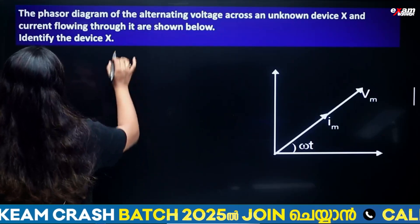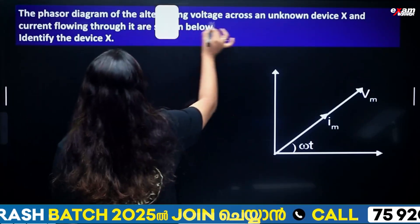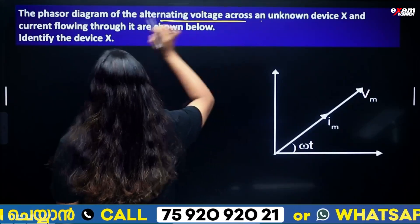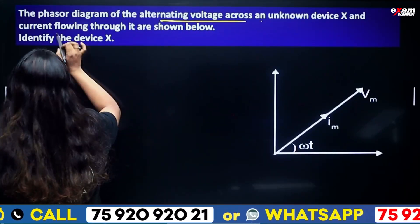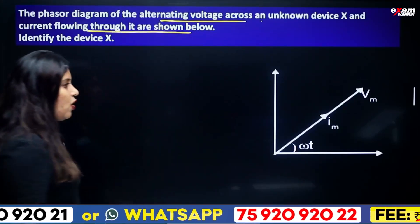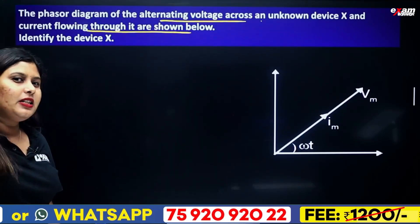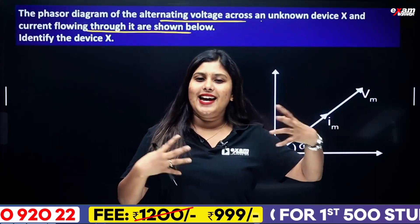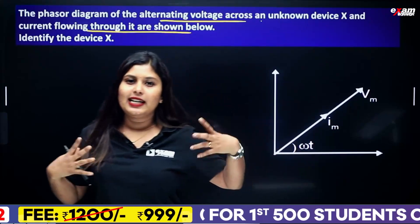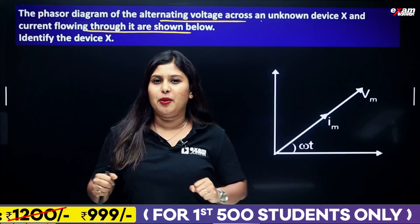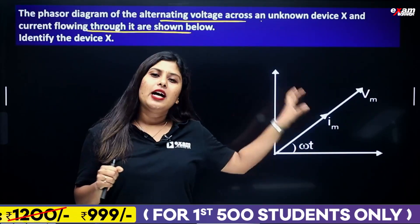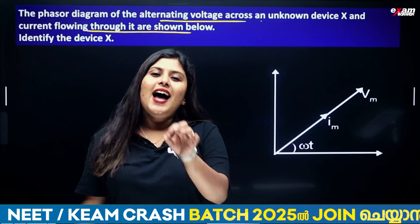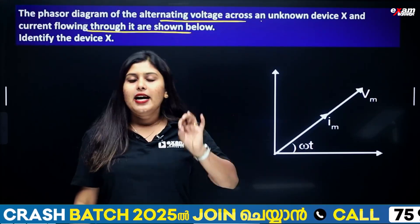The phasor diagram of an alternating voltage across an unknown device and the current flowing through it is shown below. We will look at the phasor diagram of AC voltage — the phasor diagram of current and voltage. Identify the element X.